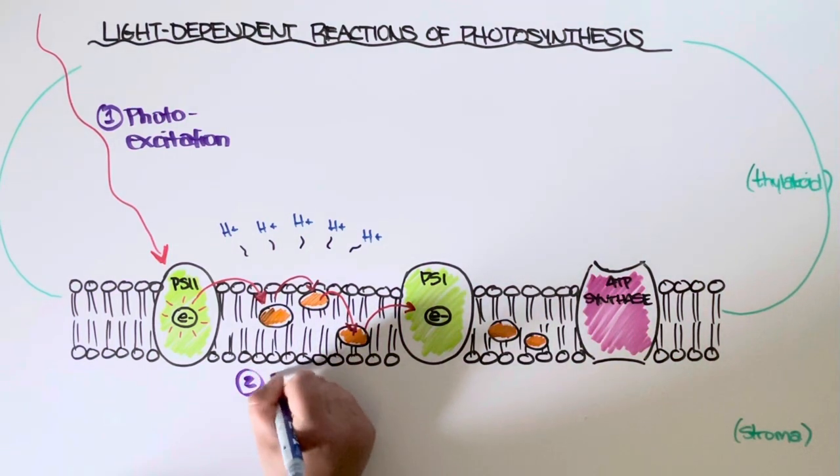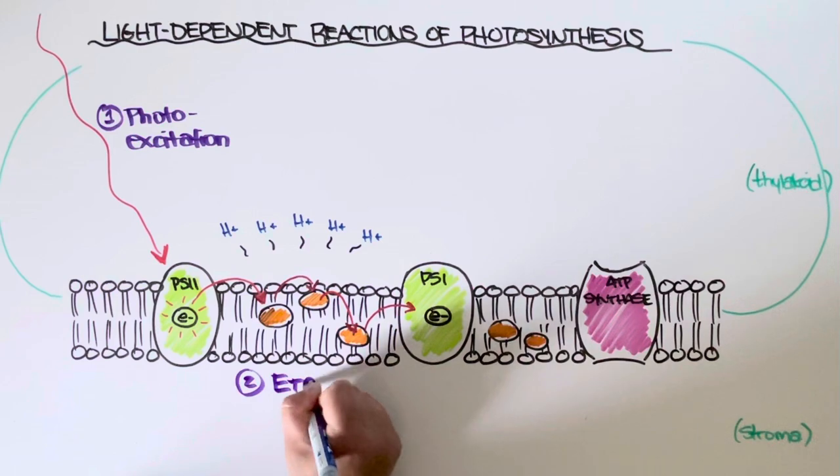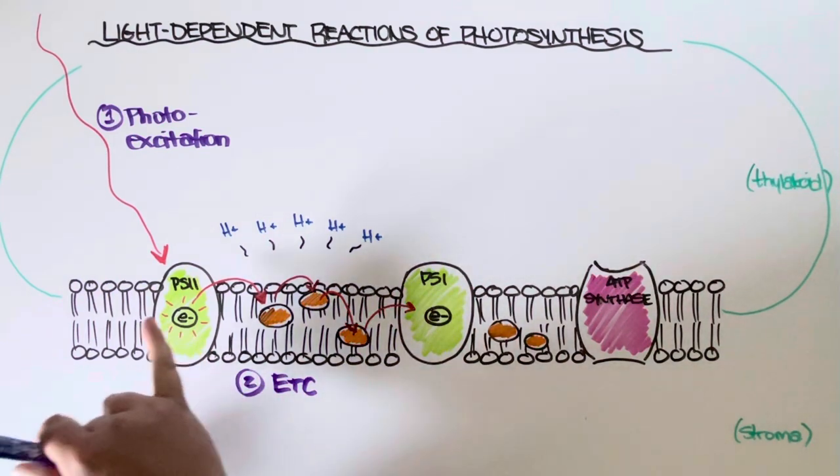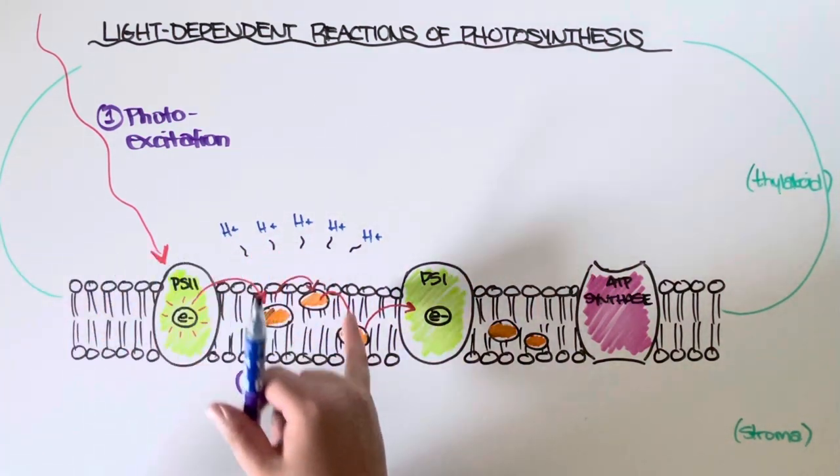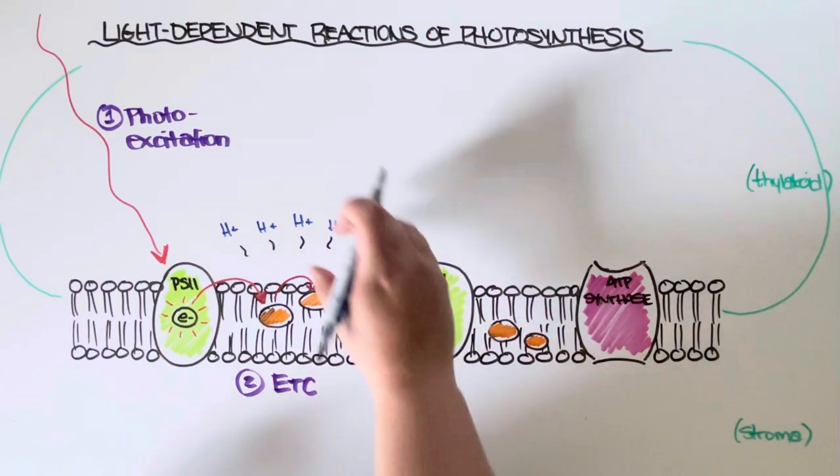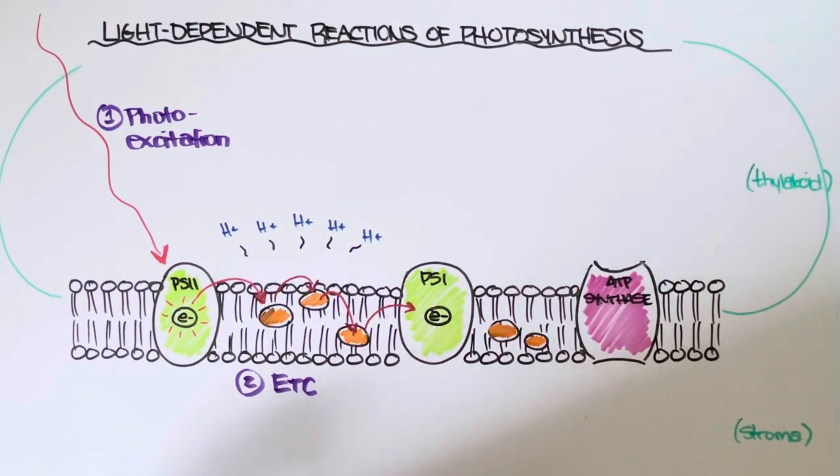So this is step number two. We call it the electron transport chain, or ETC for short, because we're literally just moving an electron down each of those proteins to help generate that hydrogen ion gradient.